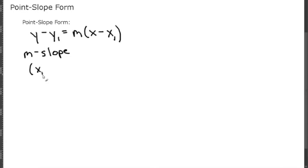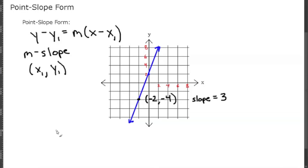And x1 and y1 is a coordinate that the line passes through. We can see that the line passes through the point negative 2, negative 4, and the slope is 3. So writing that in point-slope form, we have our x1 and y1.